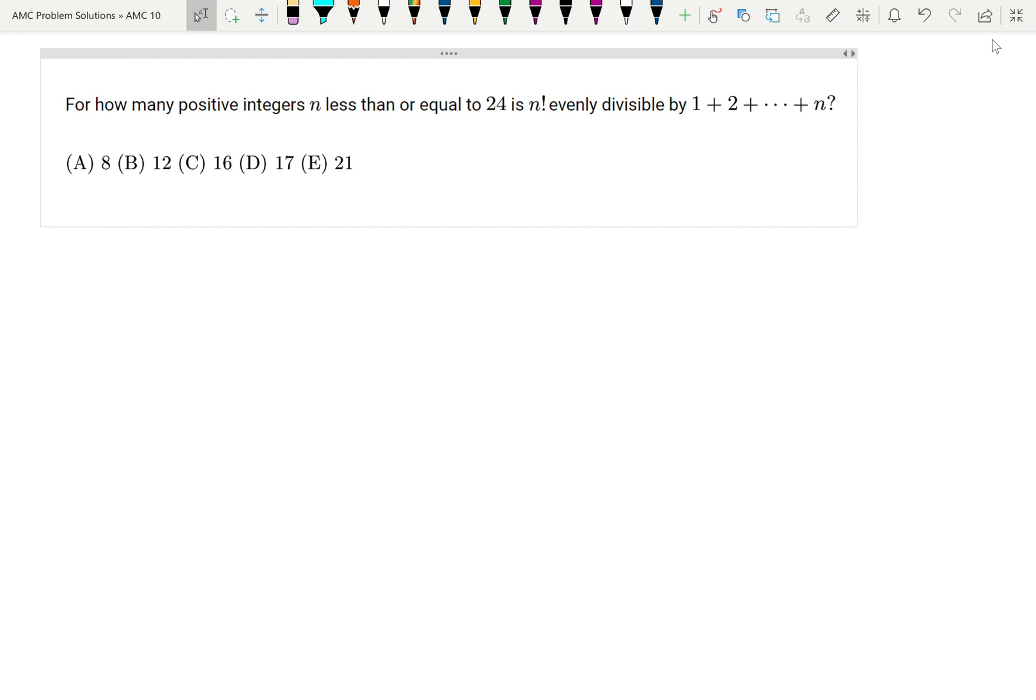First, we can write, I know that 1 plus 2 all the way to n. That sum is equal to n times n plus 1 over 2.